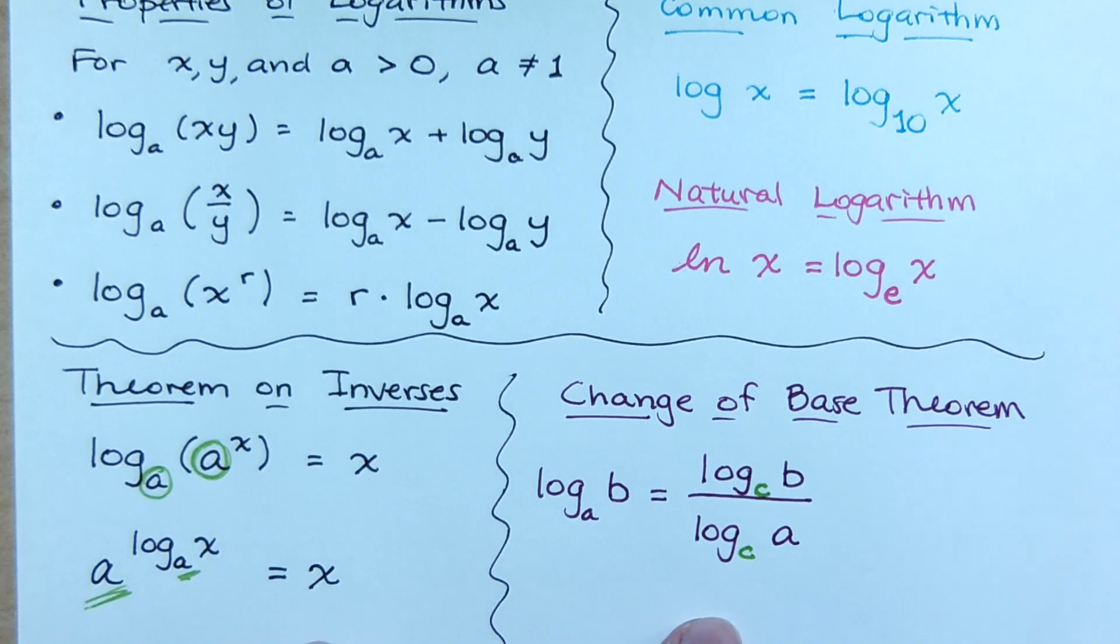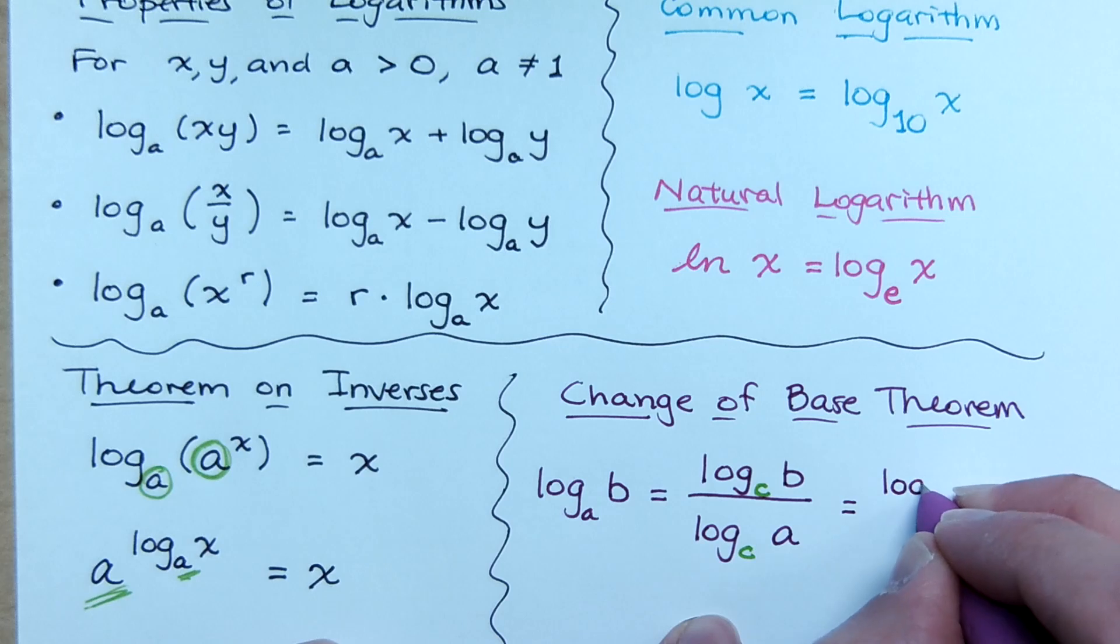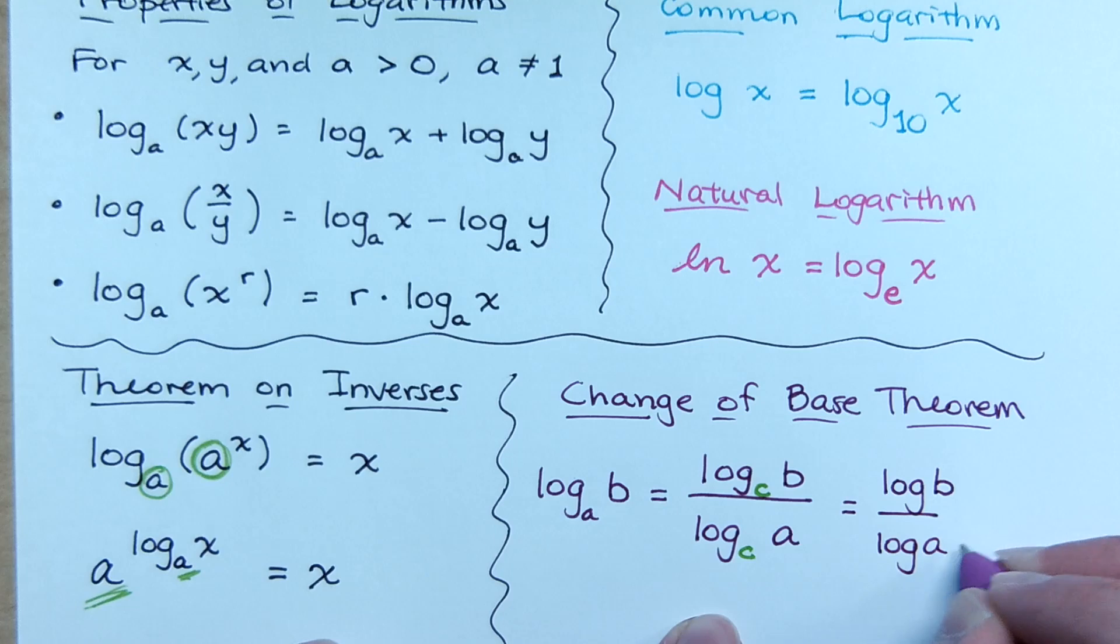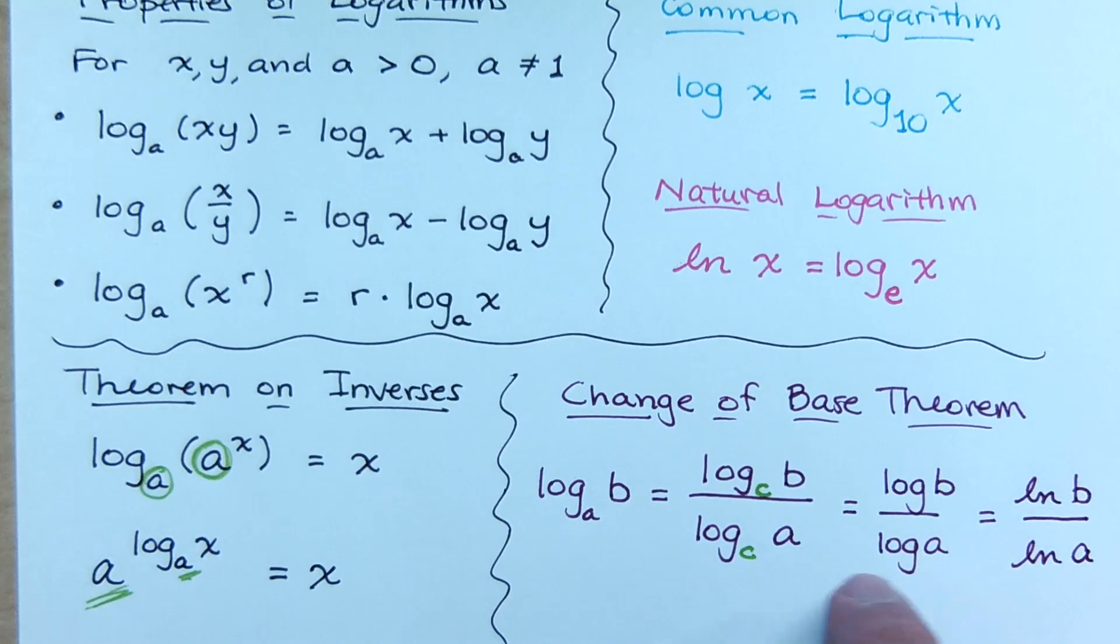Typically what you do, though, is that you do this change of base so that you can just use, say, common log. And you can say the log of b over the log of a. But you could also say the natural log of b over the natural log of a. These guys are all going to have the same value, the same meaning. So now, let's see some examples that illustrate these properties and theorems.